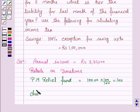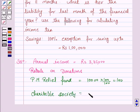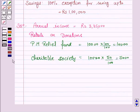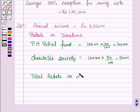She also donates Rs 10,000 to the Charitable Society and gets 50% exemption, so Rs 5,000 is rebated. Therefore, the total rebate on donations is Rs 10,000 plus Rs 5,000, which equals Rs 15,000.